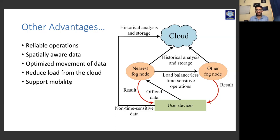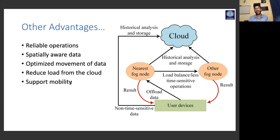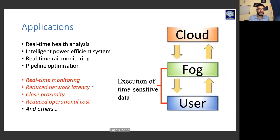Fog computing supports mobility — fog nodes nearby can easily serve users moving from one network to another. Handoff information from one fog network to another is simple. There is also the term 'fogging,' which is an umbrella term covering how you coordinate, load balance, and perform soft handoffs across fog nodes. These are terms you will come across when reading papers or different blogs.